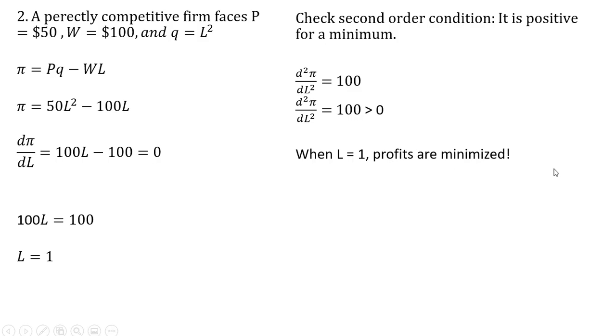So when L equals 1, profits are minimized. So if L equals 1, we could just evaluate the profit function by plugging one in for L, and we get minus 50. If L equals zero, profits are actually higher. So if we were to produce less, our profits would be higher.